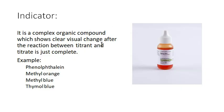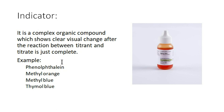An indicator is a complex organic compound which shows a clear visual change after the reaction between titrant and titrate is just complete. The indicator indicates the completion of the reaction between the titrant and titrate by a color change. Examples of indicators are: phenolphthalein, methyl orange, methyl blue, and thymol blue.